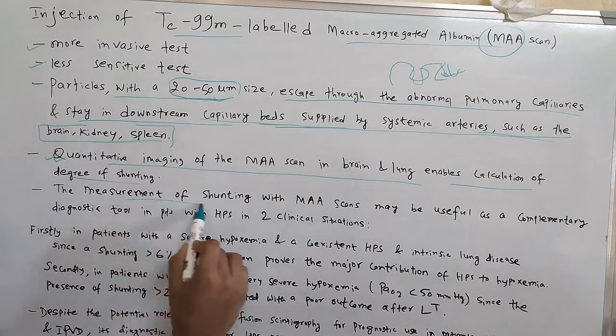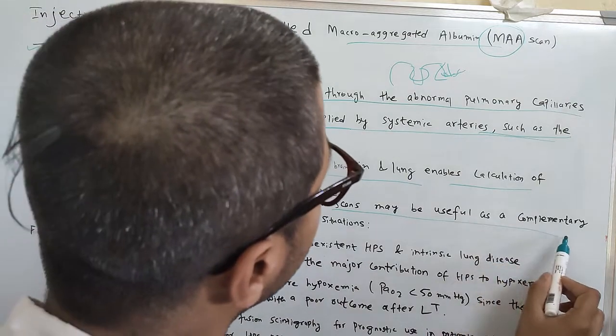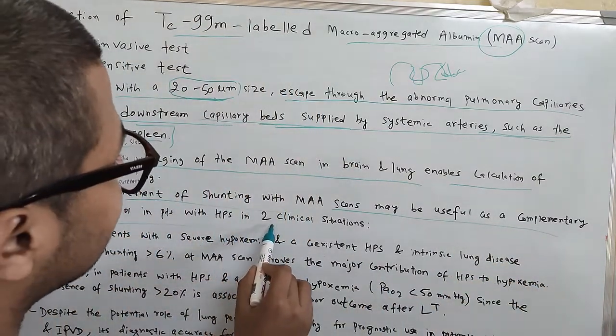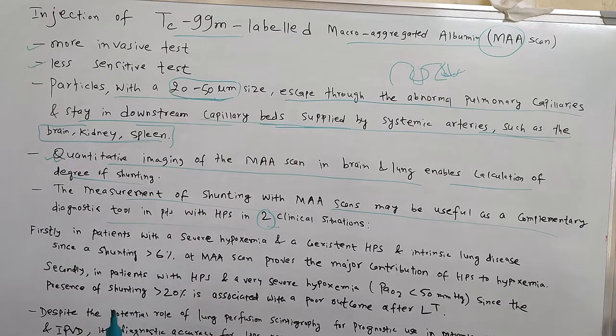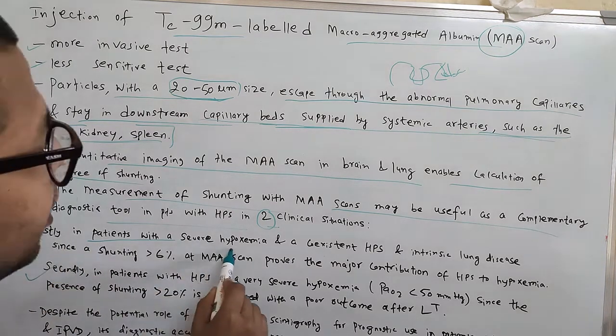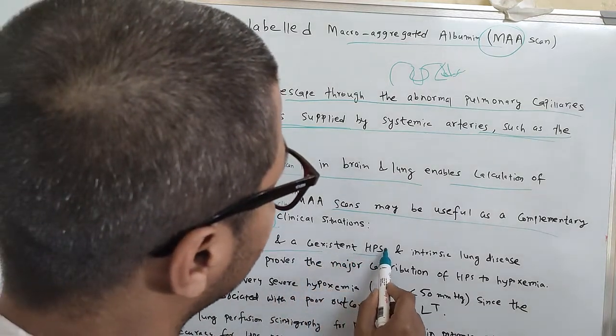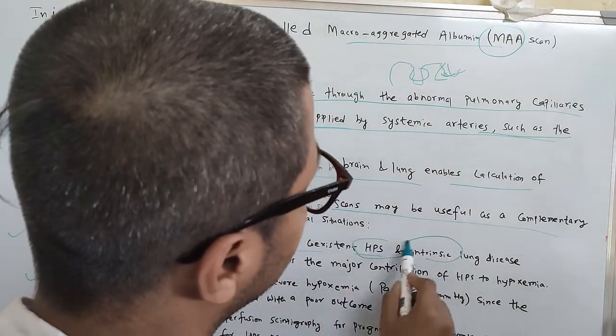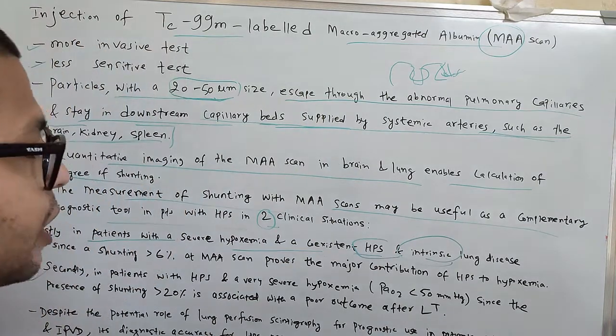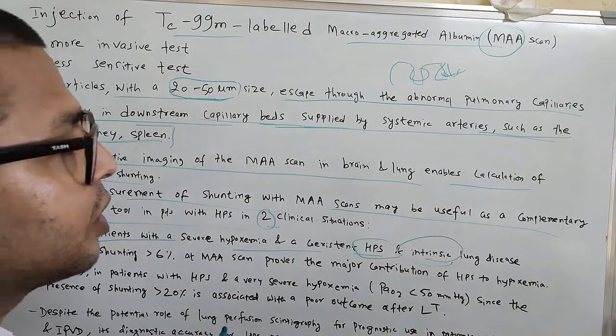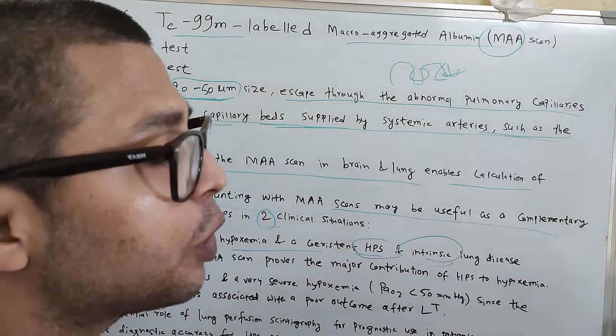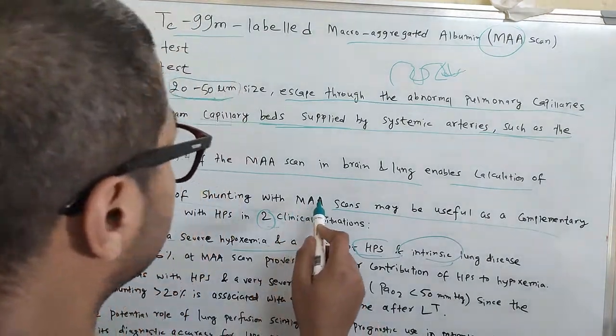The measurement of shunting with MAA scan may be useful as a complementary diagnostic tool in patients with two clinical situations. Firstly, in patients with severe hypoxemia and coexisting HPS and intrinsic lung disease, if the patient has hypoxemia and also has intrinsic lung disease and HPS coexisting, then how can you differentiate? Here comes the role of MAA scan.